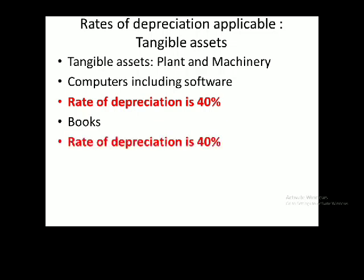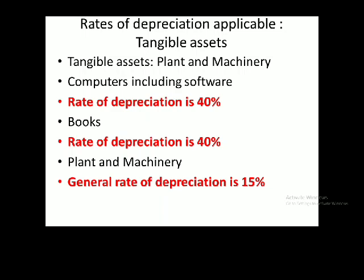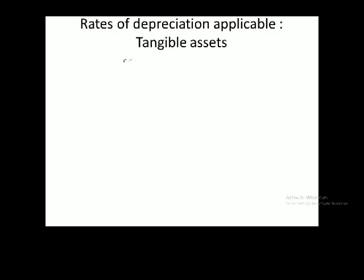For books — annual publications and non-annual publications — the rate of depreciation will be 40%. The general rate applicable to plant and machinery will be 15%, and the additional depreciation rate will be 20%.